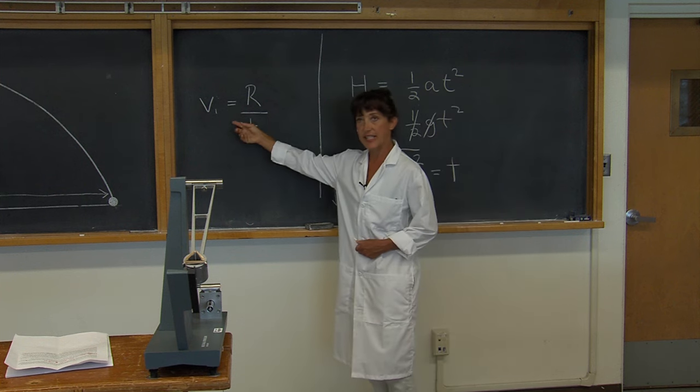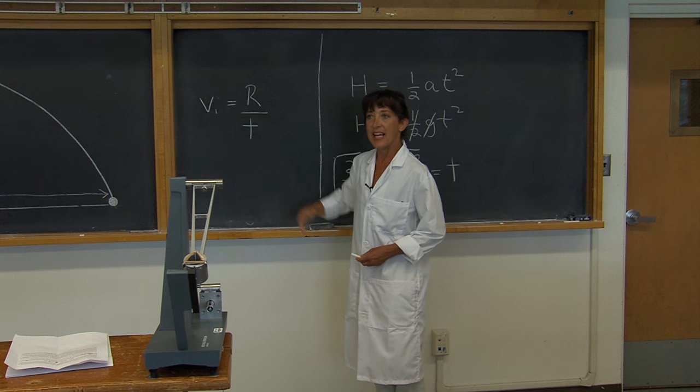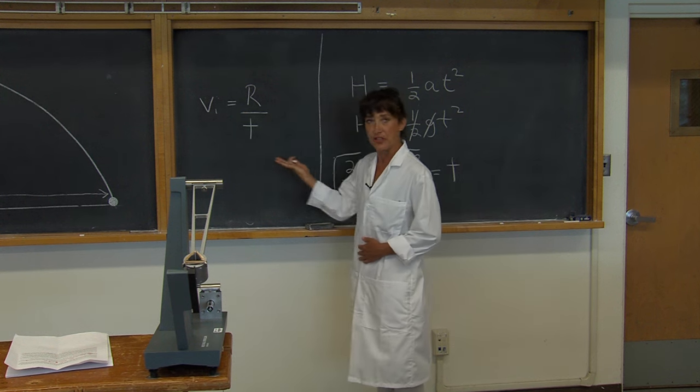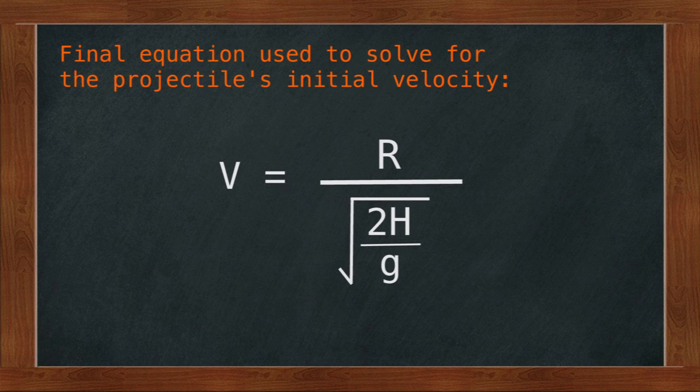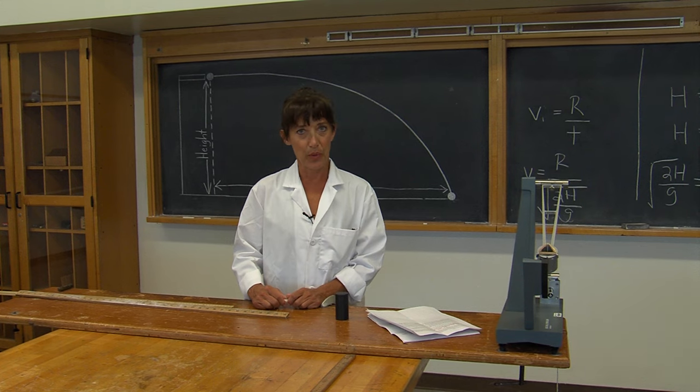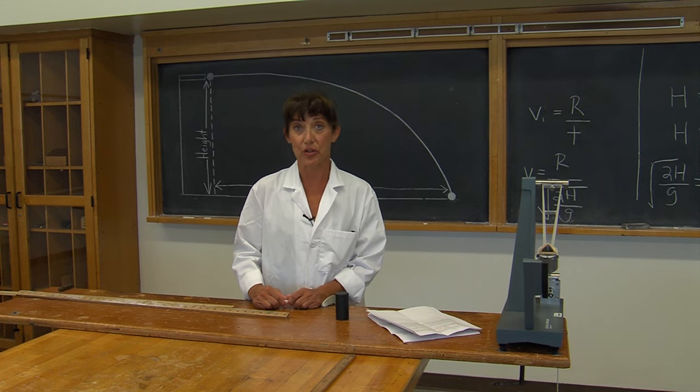I'll go back to my first expression, velocity equals r over t, and substitute in my new expression for t. So, velocity equals the range divided by the square root of 2 times the height divided by g. And this is how we will solve for the projectile's initial velocity.